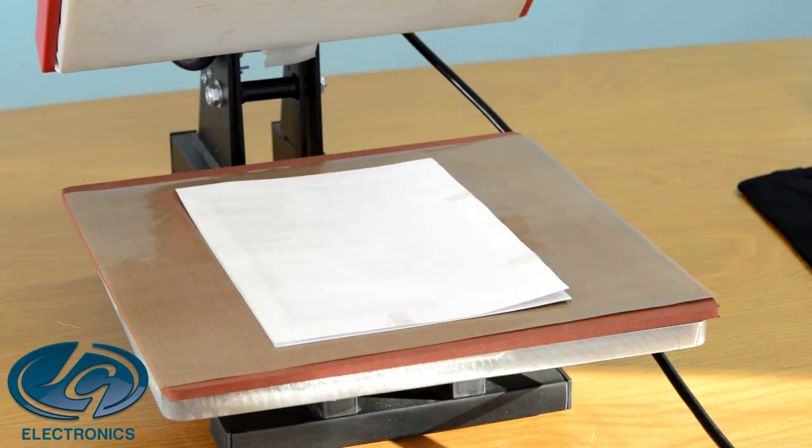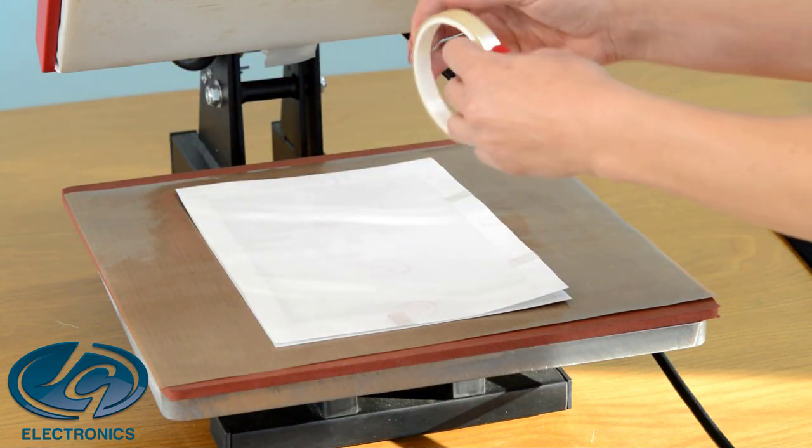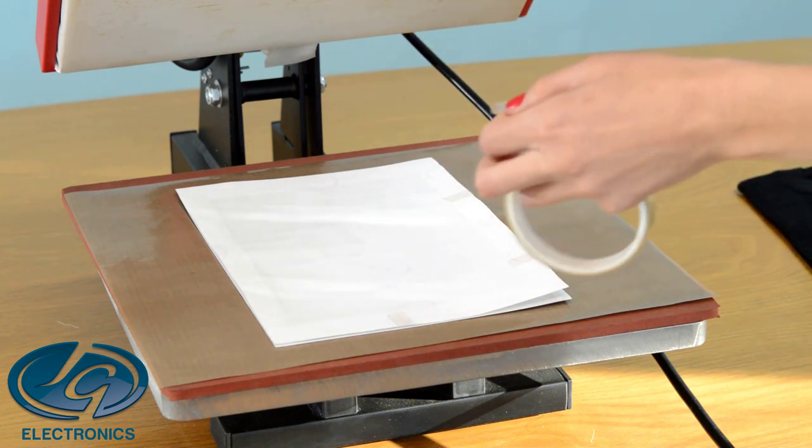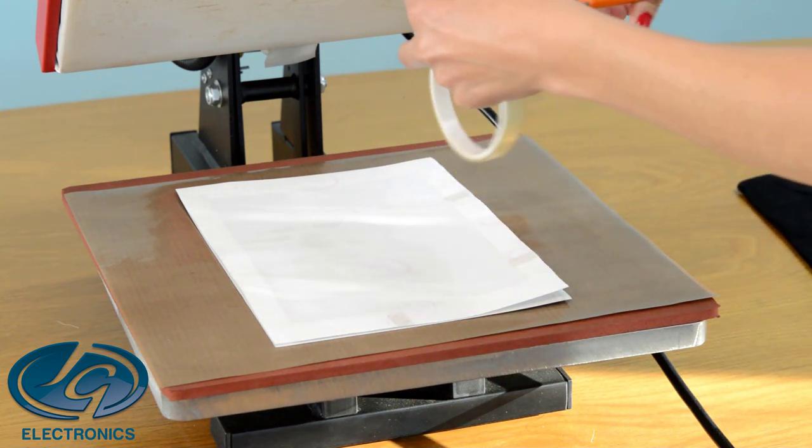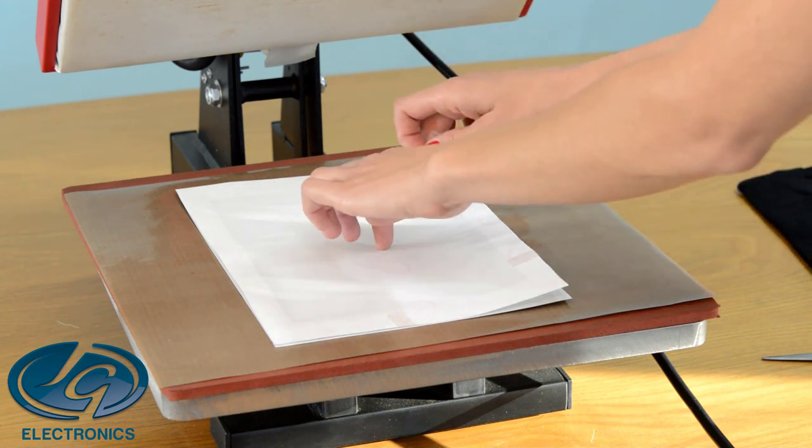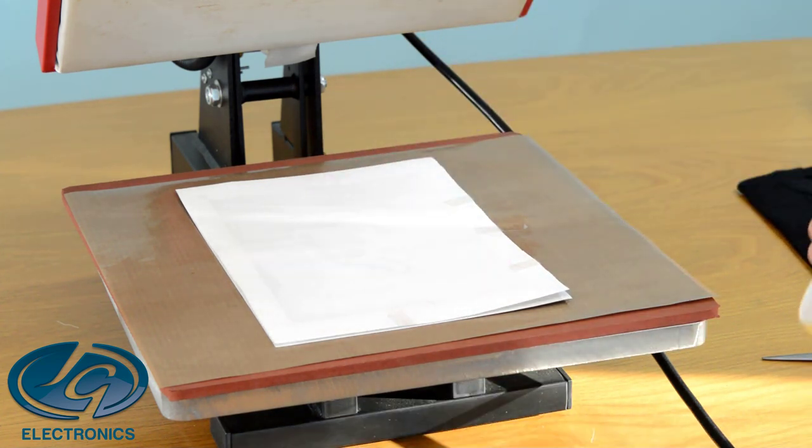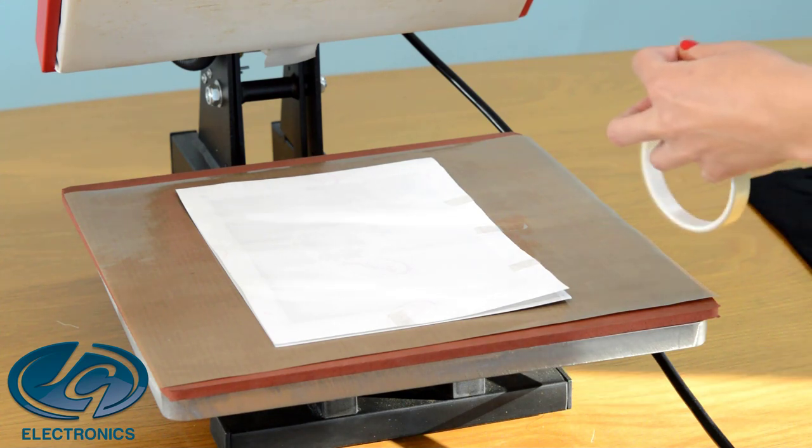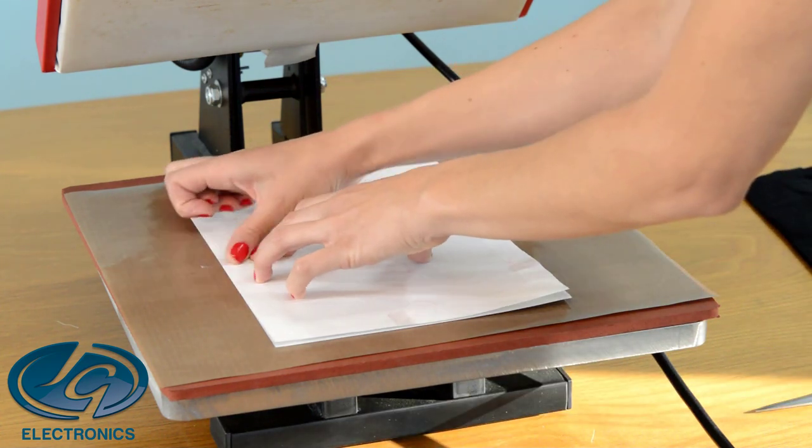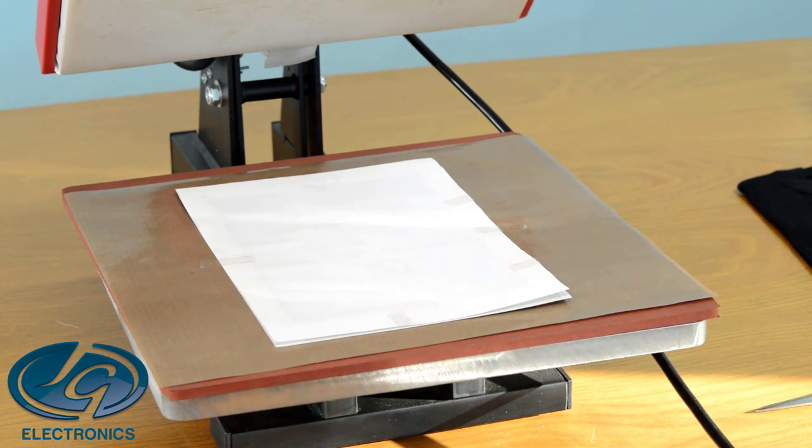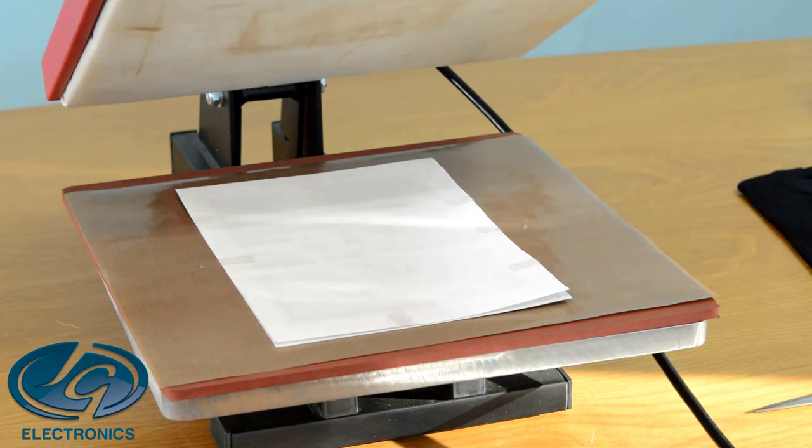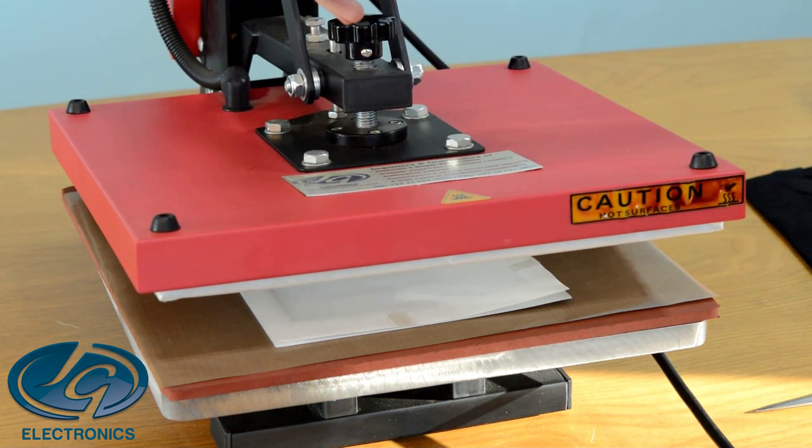If it's lined up, you're going to use your heat tape and secure it, and you're going to secure it to your press. Set your temperature to 165 degrees and your time to 90 seconds. Then press it for 90 seconds, medium pressure. Close the press.